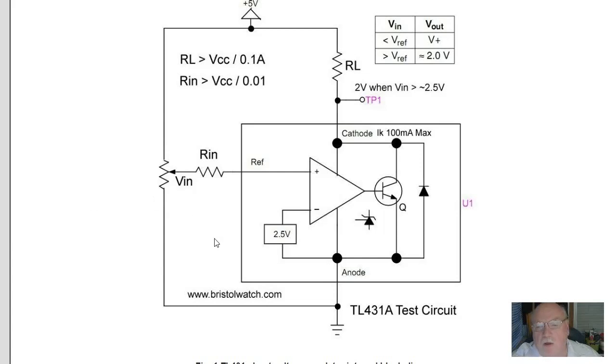Real briefly, the TL431, being a 3-pin device, consists of a comparator, an internal 2.5-volt reference, and a switching transistor.